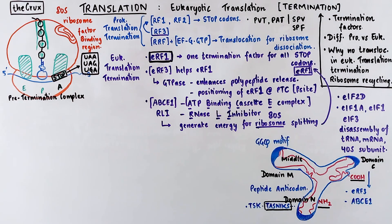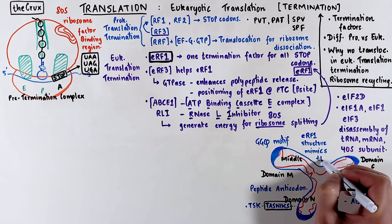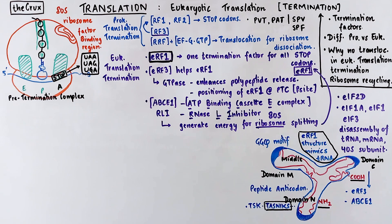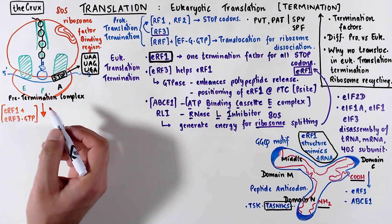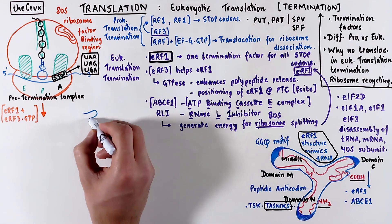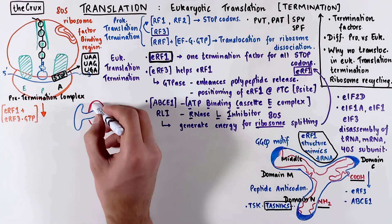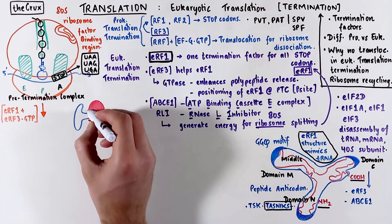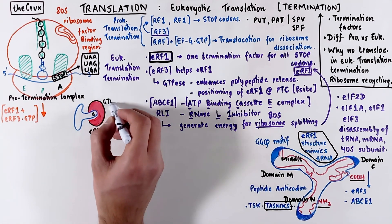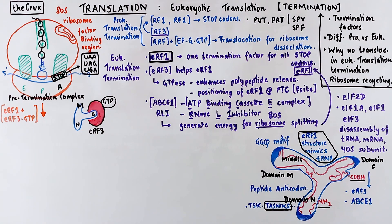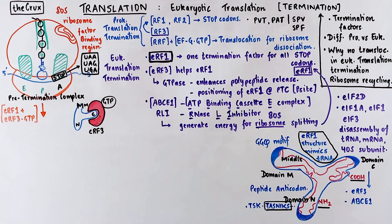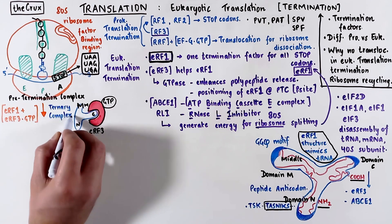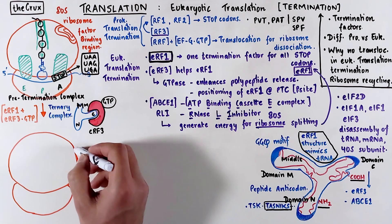This fidget-spinner-looking release factor essentially mimics the tRNA structure. Because it can recognize stop codons, it is brought into the pre-termination complex to bind the stop codon at the A site. But release factor 1 usually comes in a complex with its enhancer protein, release factor 3, which is also a GTPase and carries a GTP with itself. Release factor 3 binds at the C domain of release factor 1, but the domain M which has the GGQ motif is actually bent towards release factor 3. This ternary complex of release factors is ready to bind at the stop codon in the ATS pre-termination ribosome complex.